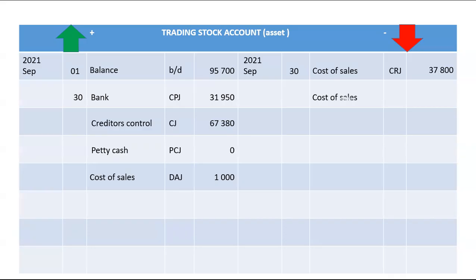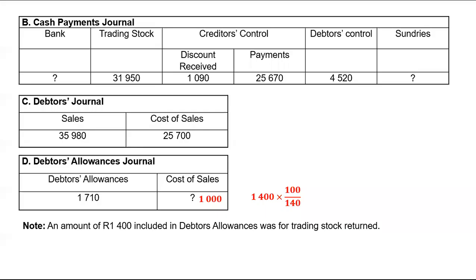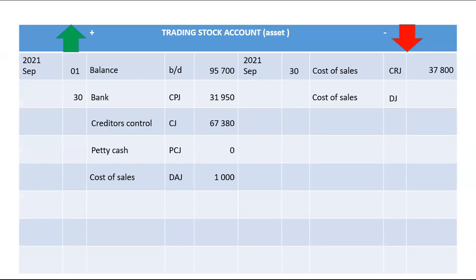Another way we can sell goods is on credit. We'll find this information in the DJ — the total of your cost of sales column in the DJ is 25,700. That 25,700 will be put on the credit side of your trading stock account.